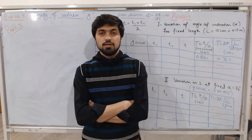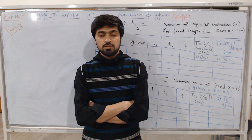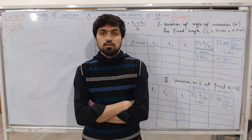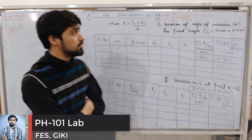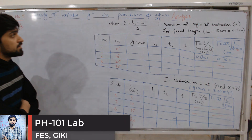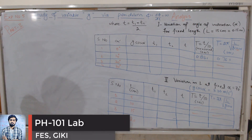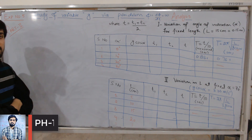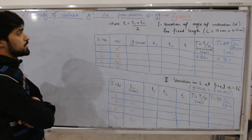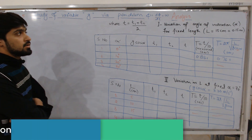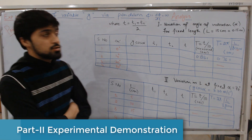In the name of Allah Almighty, the Beneficent and the Merciful, welcome to PH101 lab. This is experiment number 5, the experimental demonstration part of experiment number 5: study of variable g via pendulum.